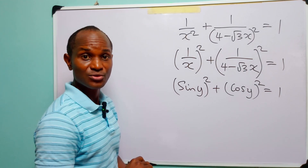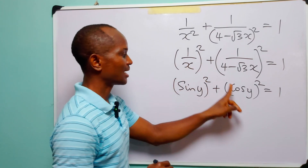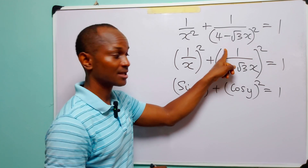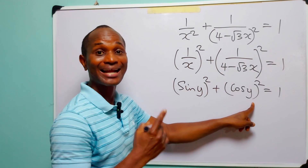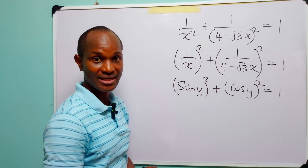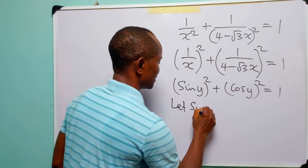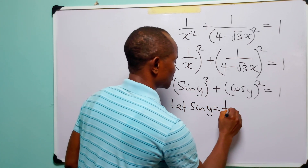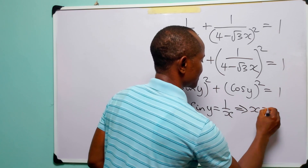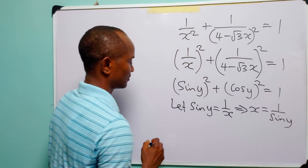So what we are going to do is to equate sine y to one over x, and cos y to one over four minus root three x, solve for y, and hence solve for the corresponding values of x. So let sine y be equal to one over x, and of course we have that x is equal to one over sine y.